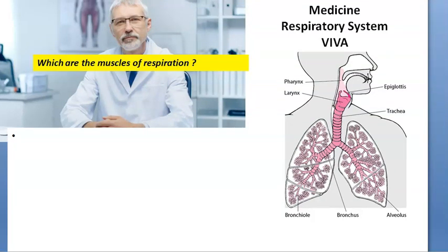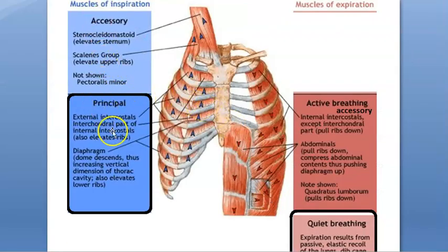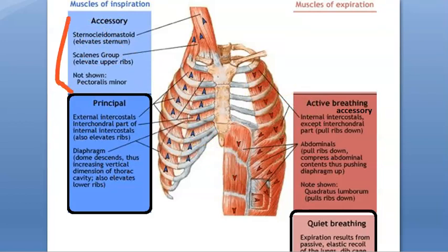Which are the muscles of respiration? Sir, the normal muscles for inspiration are the intercostals and the diaphragm. For expiration, it is a passive process. For forced inspiration, we have sternocleidomastoid and scalene muscles. For forced expiration, we can use the internal intercostal muscles and abdominal muscles.